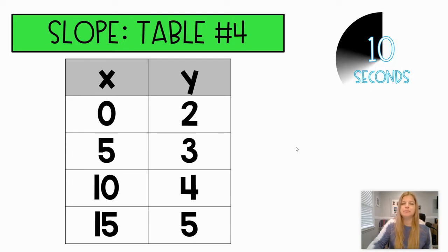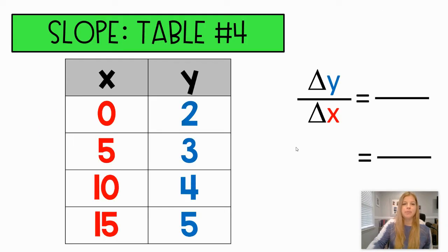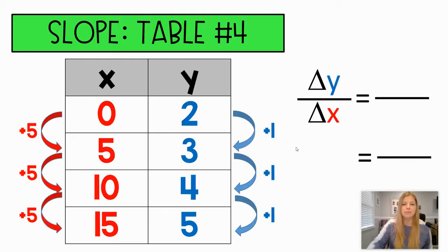Should be able to do these mentally after we see the pattern of what we're really just doing here. So my change in x is I'm adding by five. My change in y is I'm adding by one. So my slope is just one over five.